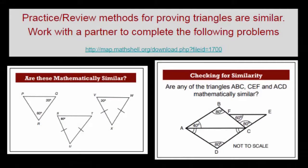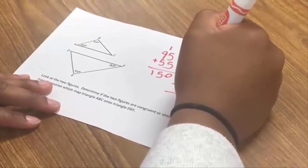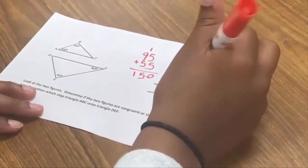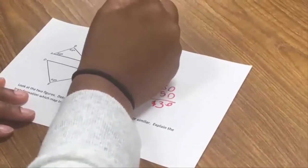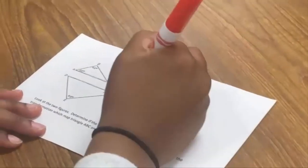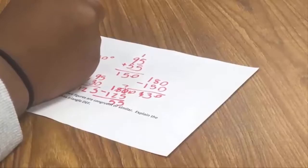One way to review the similarity standards from eighth grade would be to practice determining if triangles are similar using problems featured from the Math Shell Center. Students discuss: the angles are the same, so are the angles congruent? Yes, they are. What part of the triangles are not congruent? The length of each side.